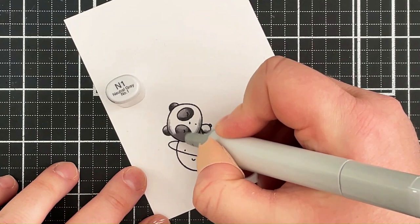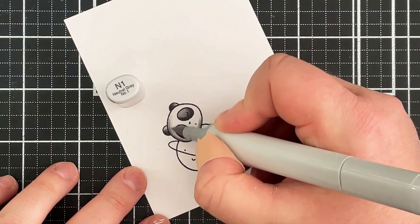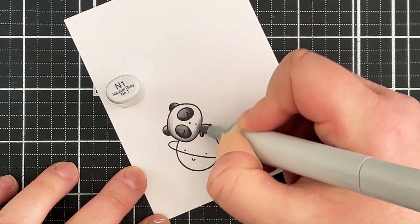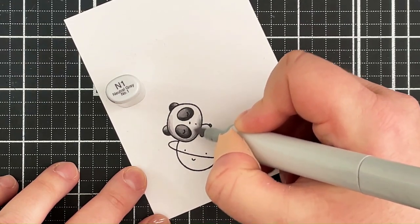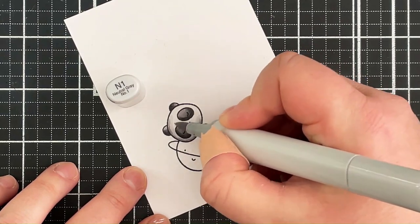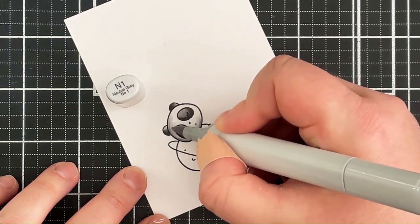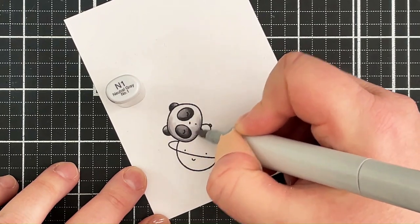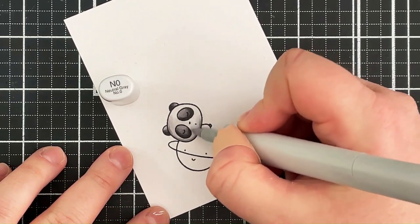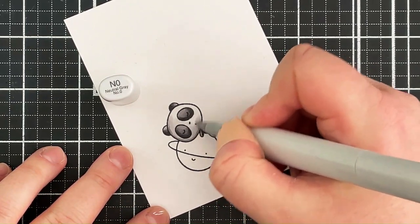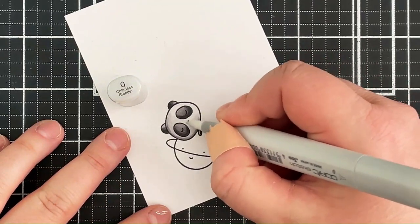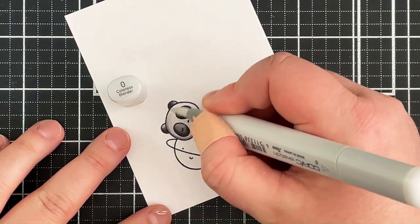So I'm then going in with the N1 and bringing that color up towards the top of his face. I have got a little bit of a harsh line there on the edge, but like I said in real life it didn't quite look as harsh as it does on camera. And then I'm going in with the N0 which is very light, then just use the colorless blender to blend that edge.